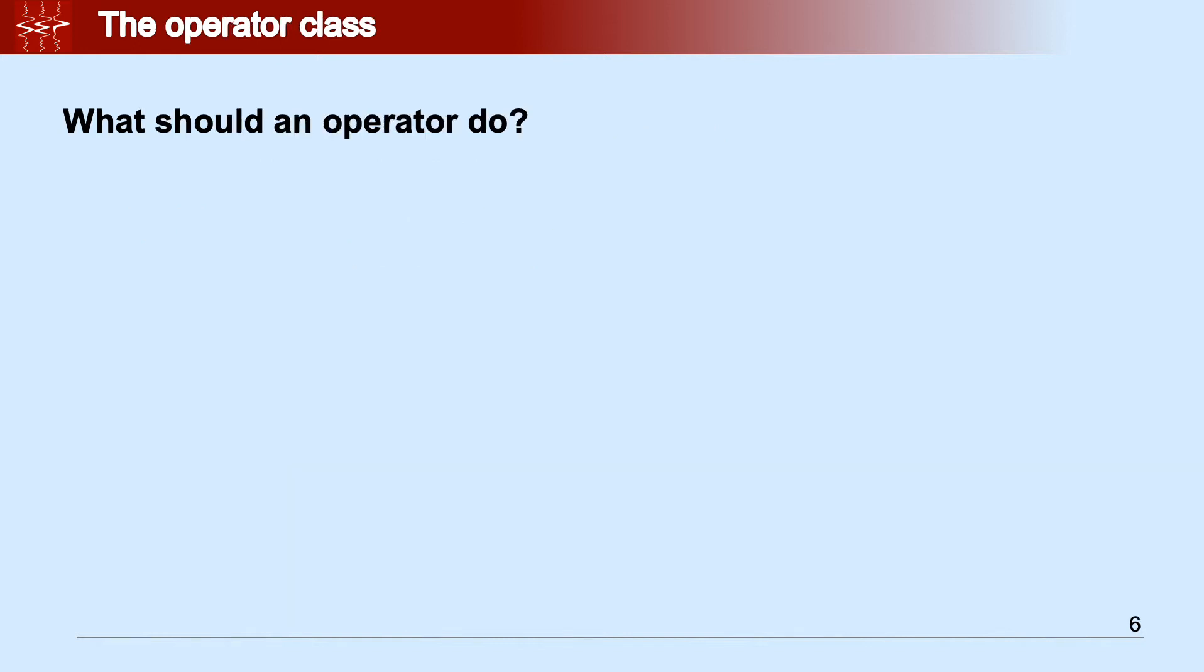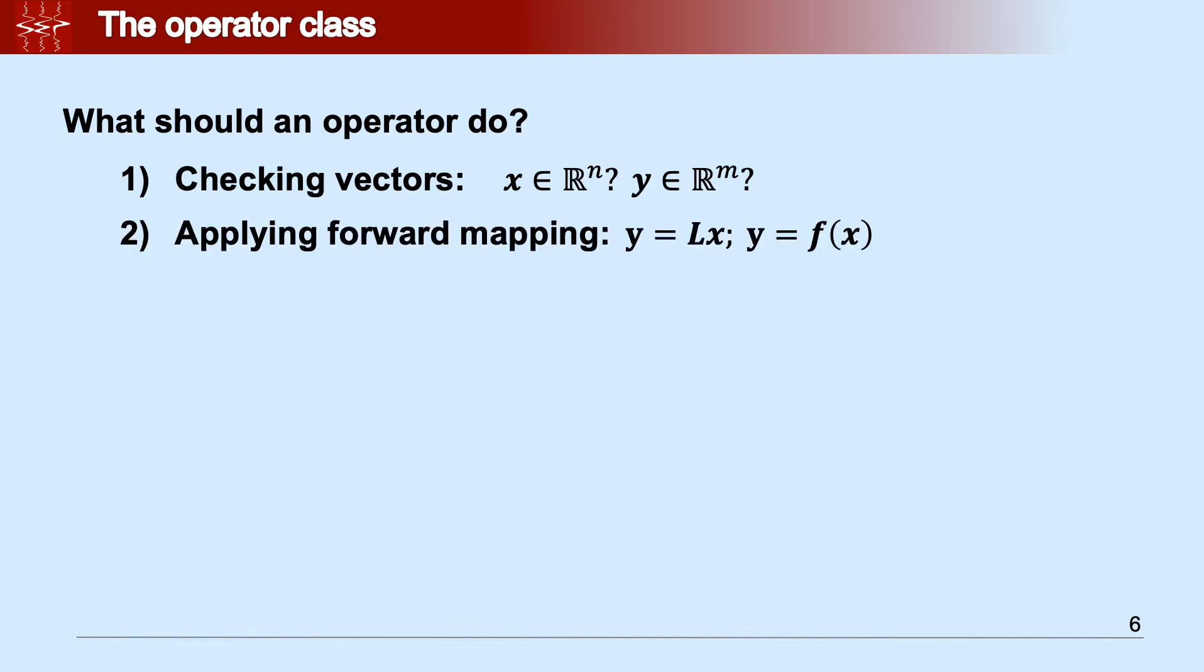What should the operator class do? When we pass an input vector x and an output vector y, we need to make sure that these two vectors are in agreement with the domain and range of the operator. Once we are sure about it, we can take the input vector and map into the output vector using the forward mapping.